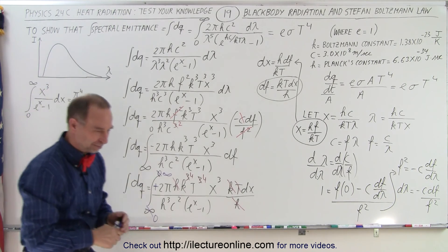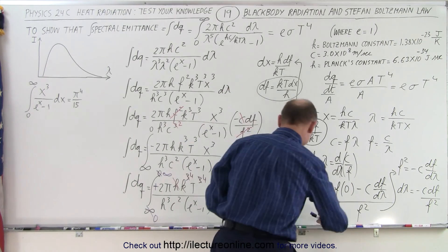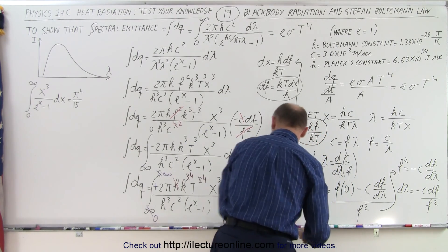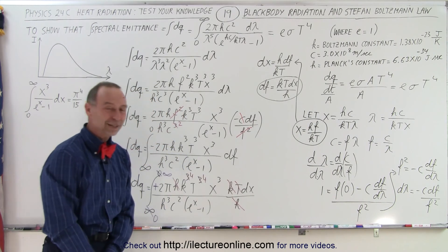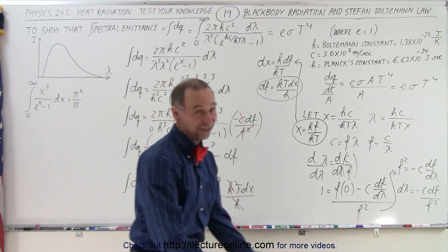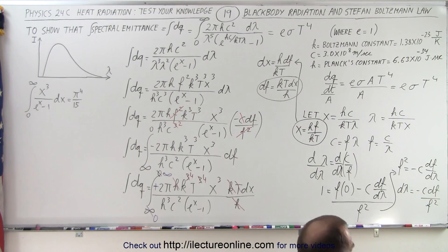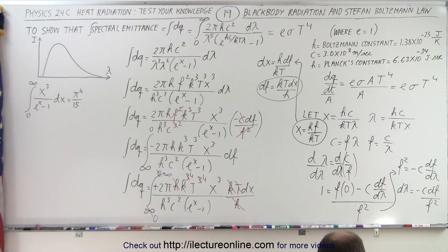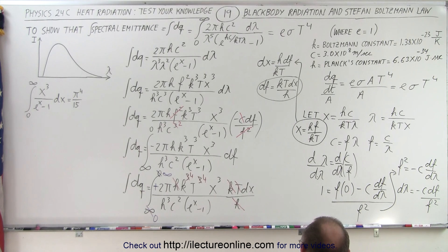Let's do a quick verification before stopping. Before the integral, we should have 2π·k⁴T⁴/(h³c²) — and checking what we have: 2π, k to the fourth, T to the fourth, h over h³ giving h², and c², which matches. So far so good!